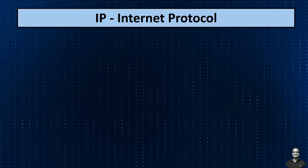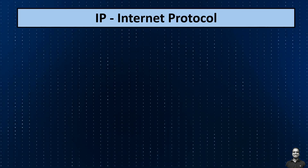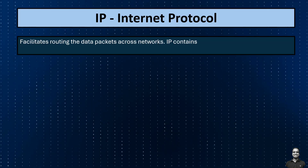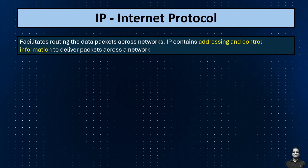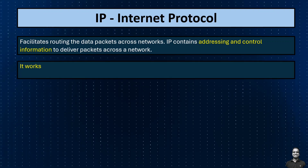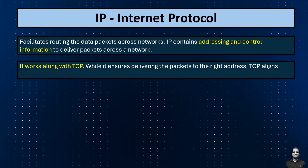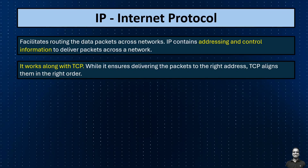Internet Protocol, or IP, facilitates the routing of data packets across networks. IP contains addressing and control information to deliver packets across a network. It works alongside TCP — while IP ensures delivering the packets to the right address, TCP aligns them in the right order.